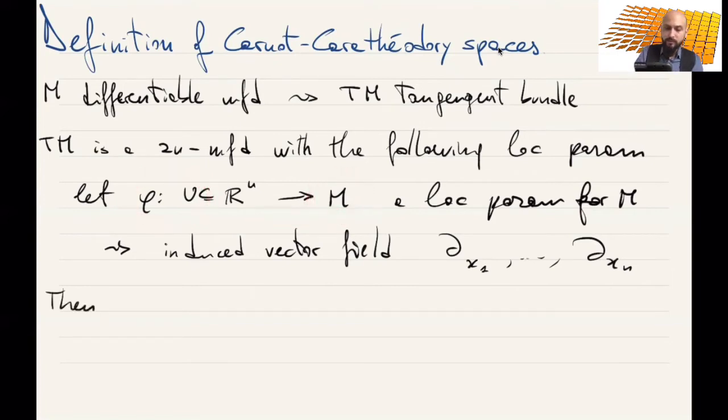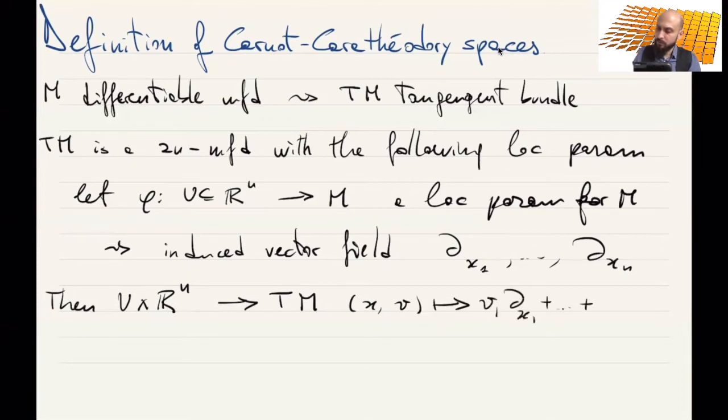Then we can parametrize the tangent bundle with the open set u times R^n mapping into TM, a pair (x,v) going to v1 dx1 plus ... plus vn dxn. This is a local parametrization for TM.